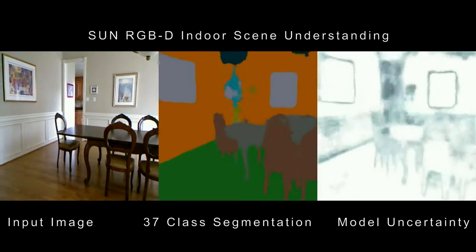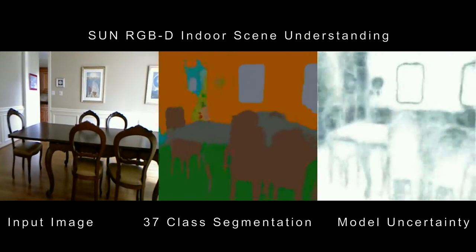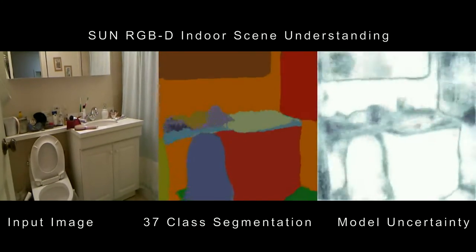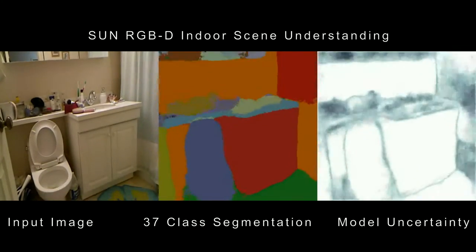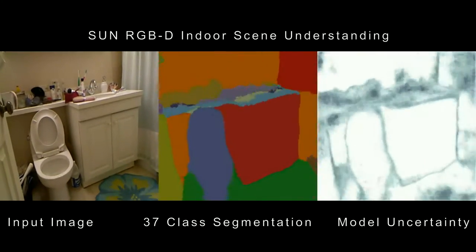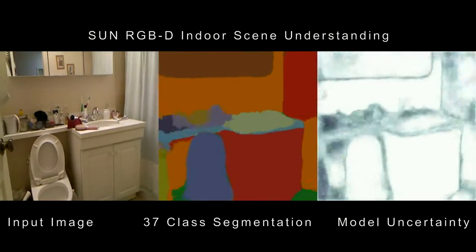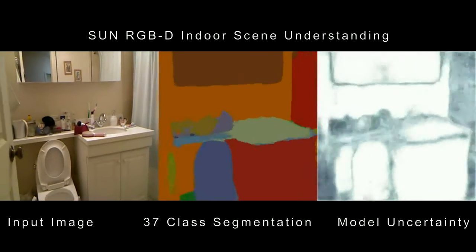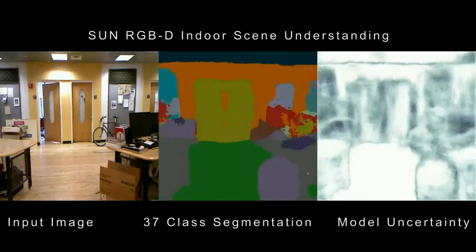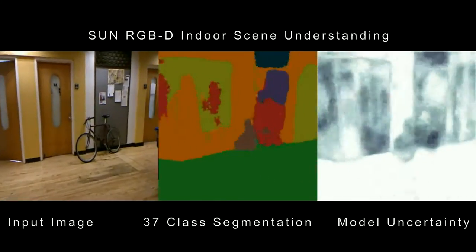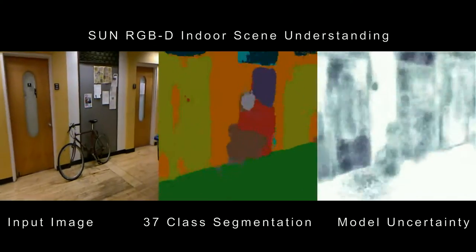This is Bayesian Segnet's performance on Sun RGBD, an indoor scene understanding dataset. This is a very challenging dataset because the visual appearance of indoor scenes varies massively. We show the segmentation of 37 different semantic classes.